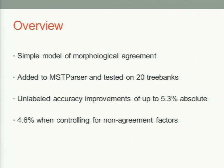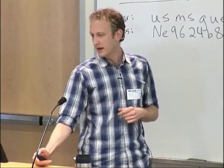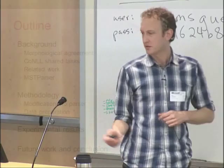Here's a little overview of what we did. We developed a simple model of morphological agreement, added it to a dependency parser called MST Parser, and tested that on a sample of 20 tree banks. We were able to get accuracy improvements of up to 5.3% absolute accuracy. Some of that was due to our model capturing things not actually related to the agreement we were trying to model, so when we controlled for that, the improvements were about 4.6%, which is still pretty good.